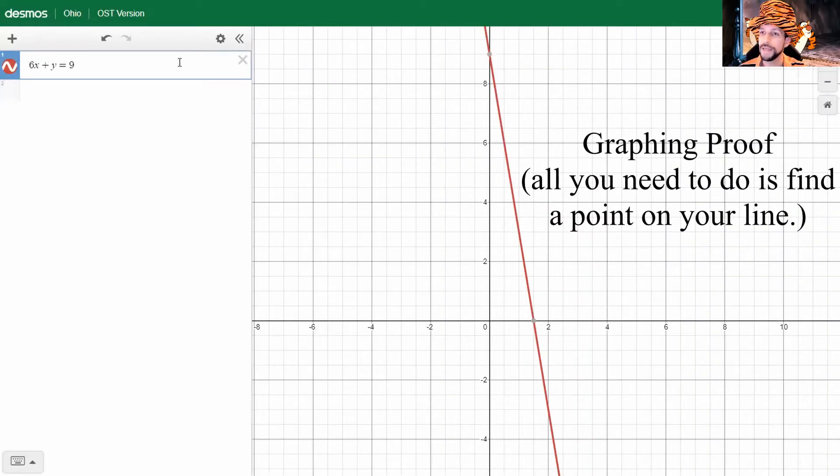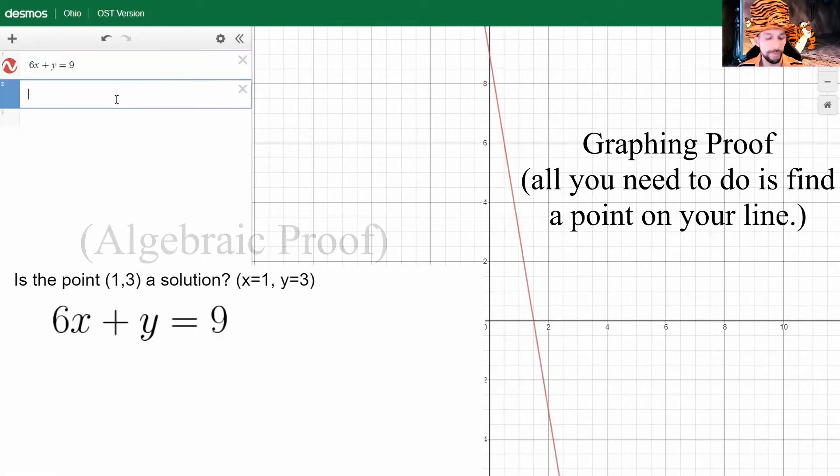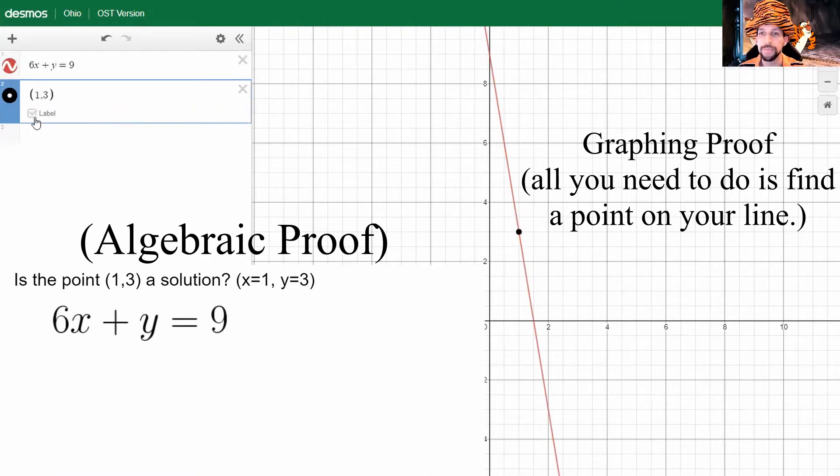Alright, I'm in Desmos and I've graphed my line. I've zoomed out a little bit so I can see at least one point is 0, 9. I'd like to know another. This isn't an integer, so I'm going to find somewhere around 1. It looks like 1, 3 is a solution. I'm gonna plot that point and label it.